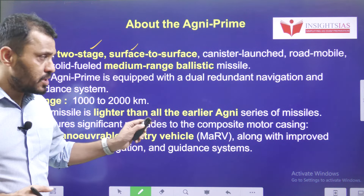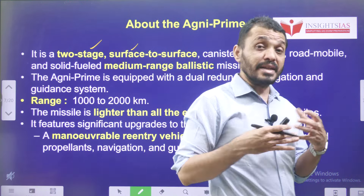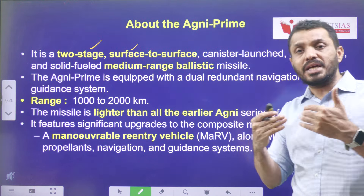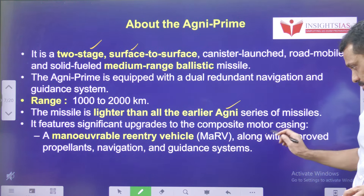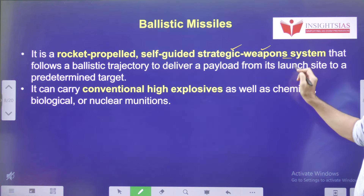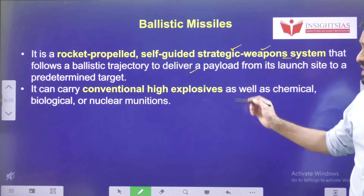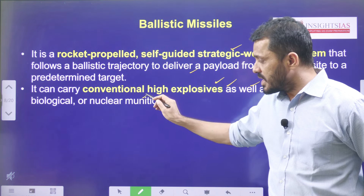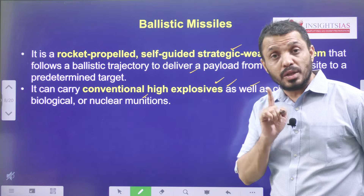The Agni Prime is lighter than all the Agni 5 series missiles. Its main advantages are that it is ready to launch at quick notice and can be launched from a moving platform. It is a lighter, improved, self-guided strategic weapon system. Its ballistic trajectory is hyperbolic. It can carry conventional high explosives as well as chemical, biological, and nuclear munitions.